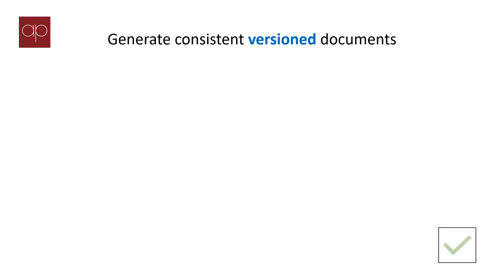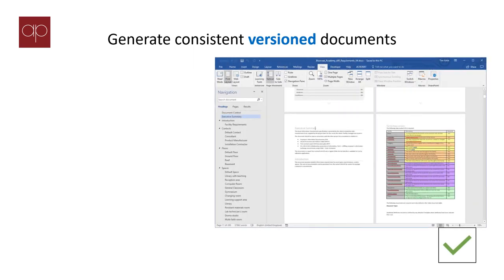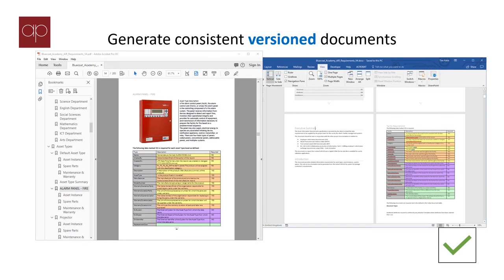ActivePlan AIR will generate consistent quality documents with fully detailed requirements. The system stores each version of the document and lists the contributors. As a Word document, you can then add in your own addendums, change the styles and or use your own corporate templates.